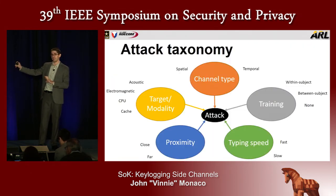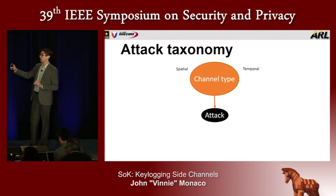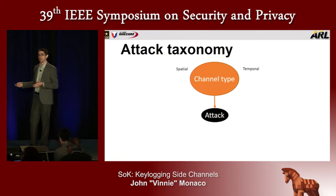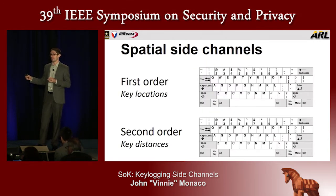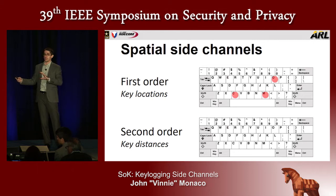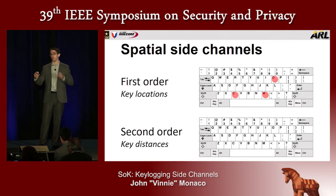We have a taxonomy developed as part of this work that characterizes each attack along roughly five dimensions. I'd like to focus on the one I consider most interesting and important: how a keylogging side channel actually leads to keylogging, which could be by leaking either spatial information, temporal information, or a combination of the two. A spatial side channel gives us either key locations or key distances. A first-order spatial side channel provides a coordinate or location on the keyboard — using acoustics as an example, multiple microphones positioned around the keyboard could use time-difference-of-arrival to localize the sound source of a keystroke.